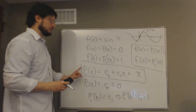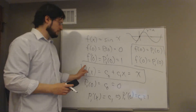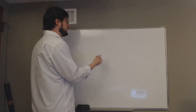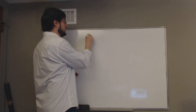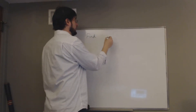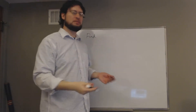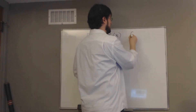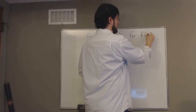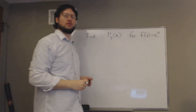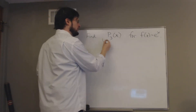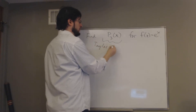So P1(x), the first-degree approximating polynomial, is just x. The tangent line to sin(x) at x = 0 is y = x, with slope 1. This seems like a long way about it, but it's a good way to move toward higher-degree polynomials. This thing here is going to be called the Taylor polynomial.